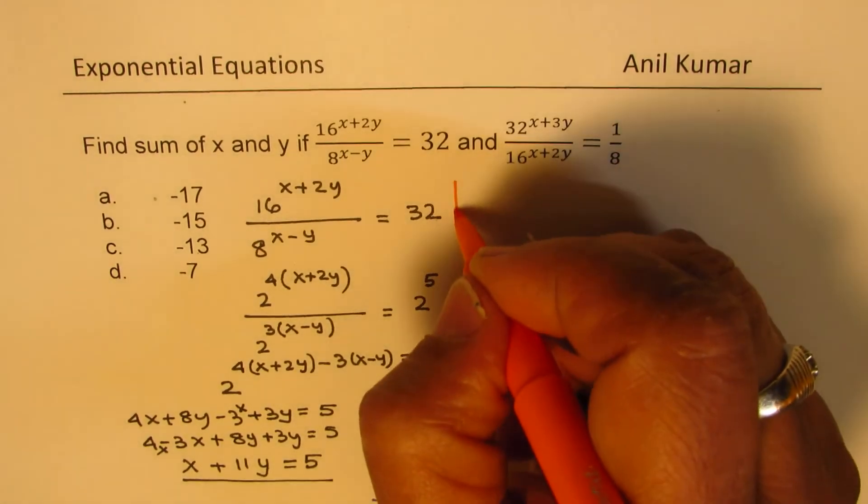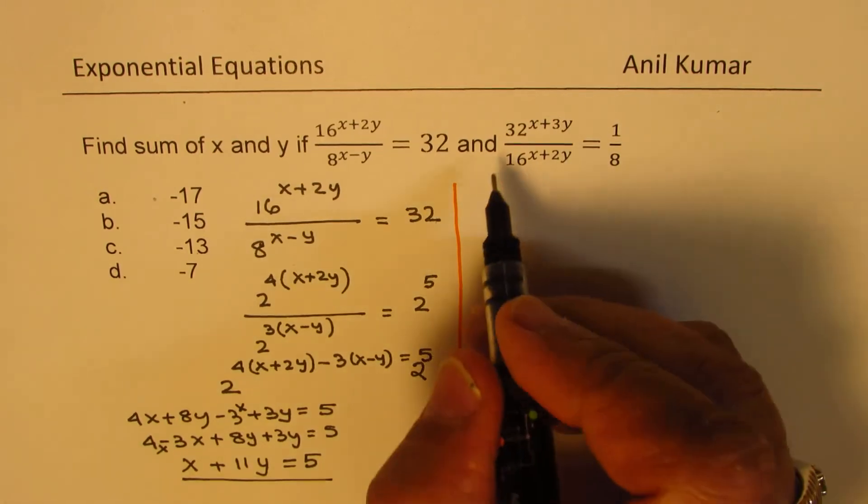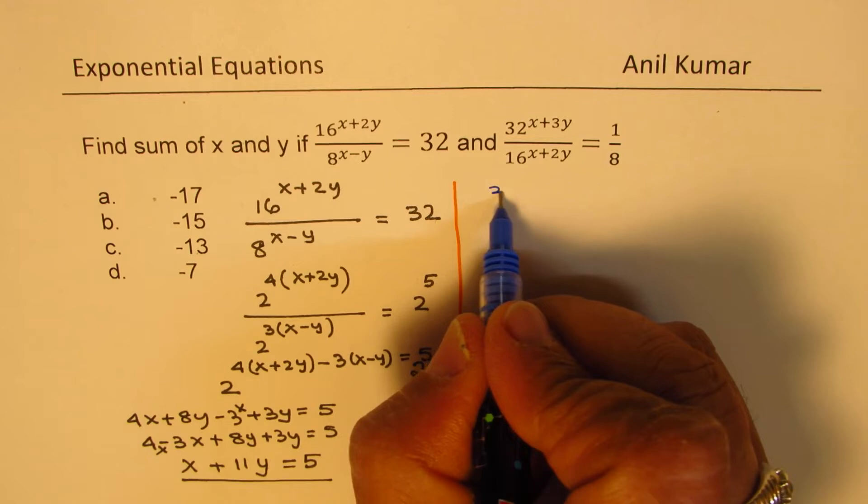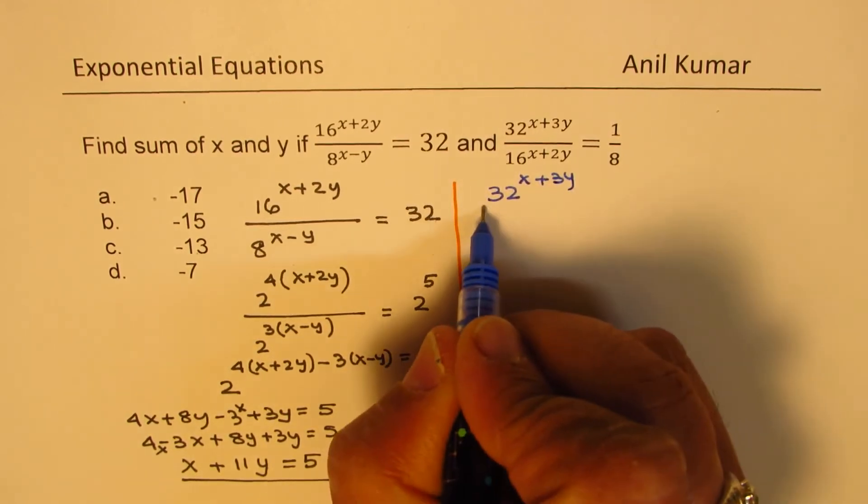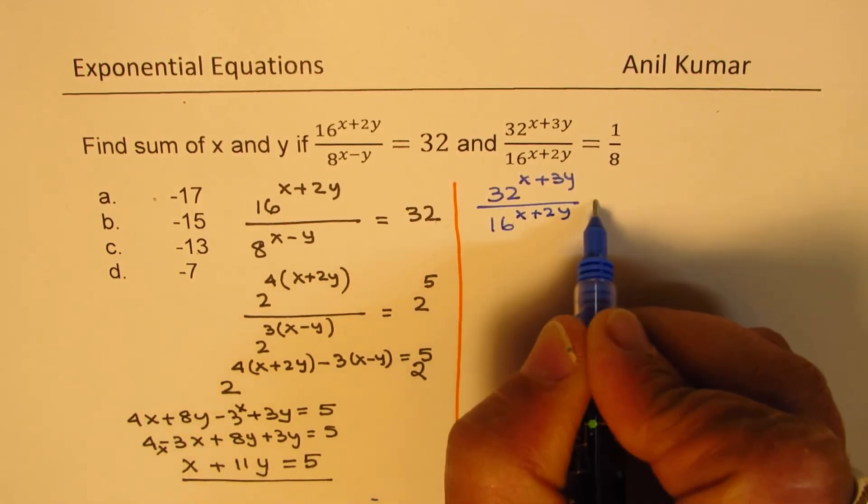Now let's see how to solve the other equation, rather simplify. We have 32 to the power of x plus 3y over 16 to the power of x plus 2y equals 1 over 8.